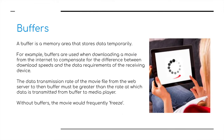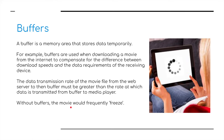Here's a great example of buffering: when we're trying to watch a movie on Netflix, maybe on an iPad. A buffer is a memory area that stores data temporarily. Buffers are used when downloading a movie from the internet to compensate for the differences between download speeds and the data requirements of the receiving device. The data transmission rate of the movie file from the internet to the buffer must be greater than the rate at which data is transferred from the buffer to the media player. Without buffers, the movie would frequently freeze and pause.